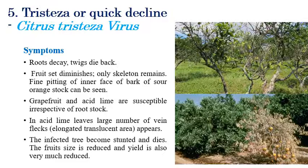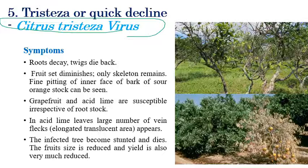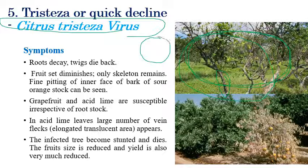Citrus tristeza virus causes quick decline. The characteristic symptom is stem pitting — visible pitting of the stem — along with wilting. Roots and twigs slowly start to decay and dieback symptoms are evident. Infected plants show stunting, yellowing of all leaves, premature defoliation, and complete wilting. Fruit size is greatly reduced; for example, infected lime fruits are much smaller than normal. The inner bark can be completely shredded off, and stem pitting is the characteristic symptom of tristeza quick decline.